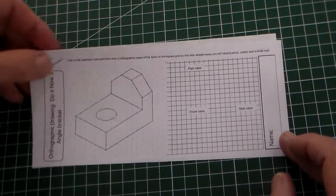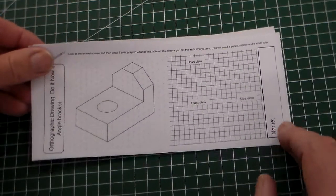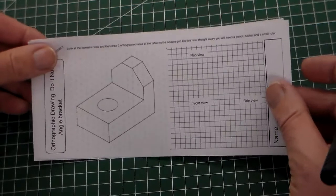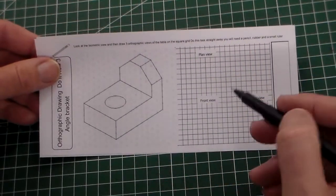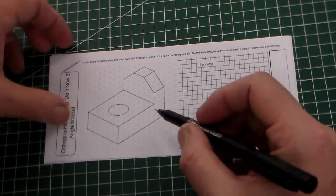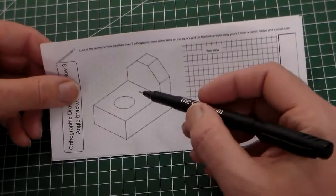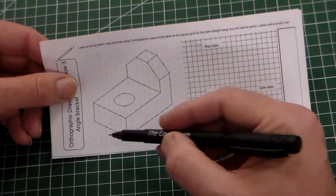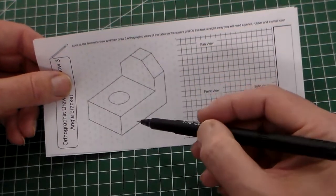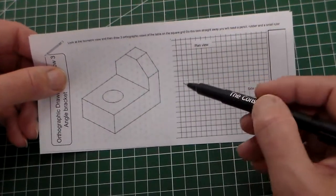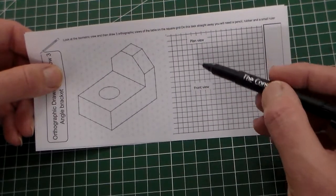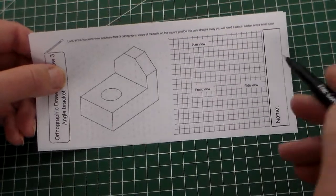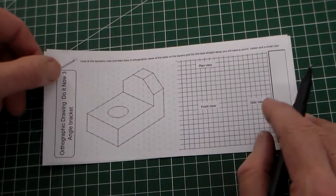Hello, this is another orthographic drawing do-it-now task called the angle bracket. We've got an angle bracket here, an isometric drawing on this isometric grid, and what we're trying to do is draw a third angle orthographic drawing with three views: plan view, front view, and side view.